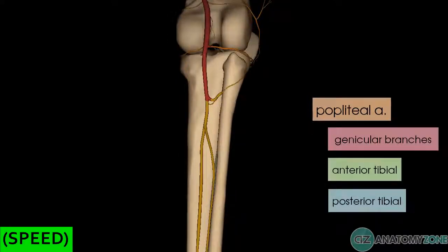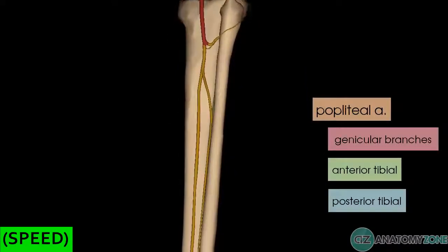The posterior tibial artery descends along the superficial surface of the deep posterior muscles of the posterior compartment, and it gives off the fibular artery, which is also referred to as the peroneal artery, and this branch supplies the lateral compartment of the leg.